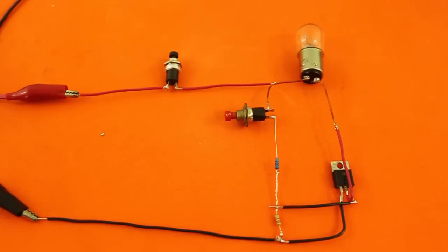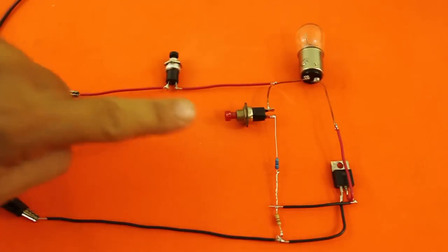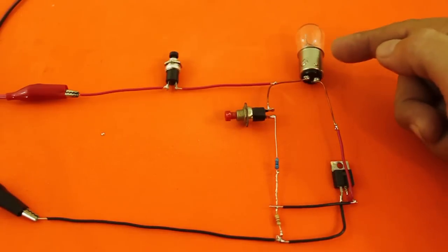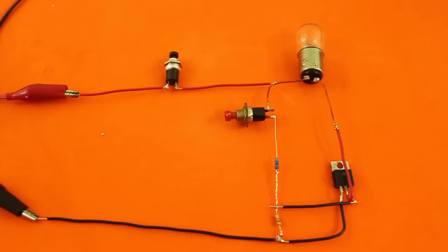And here's our test circuit, same as in the diagram: normally closed switch, normally open switch, the two resistors, the thyristor, and our load that is an incandescent lamp.